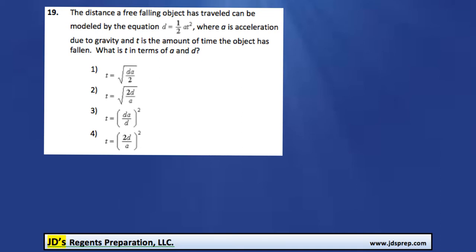This is problem number 19 from the June 2015 Algebra Regents exam. The distance a free-falling object has traveled can be modeled by the equation d equals 1/2 times at squared, where a is the acceleration due to gravity, and t is the amount of time the object has fallen.